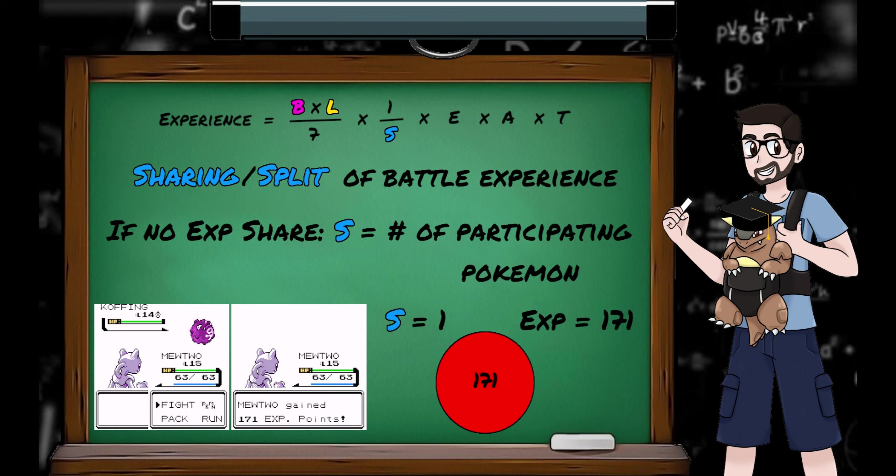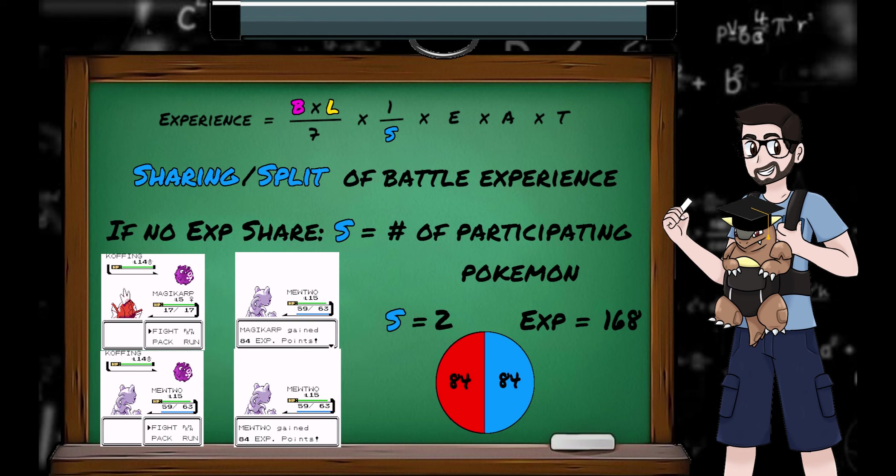If no XP shares are in use, the value of S is how many non-fainted Pokemon took part in the knocking out of the enemy. So if my Mewtwo knocks out the Koffing on its own, it gets 171 experience. But if I was to switch train with a Magikarp, both Mewtwo and Magikarp would receive half of the XP pot.